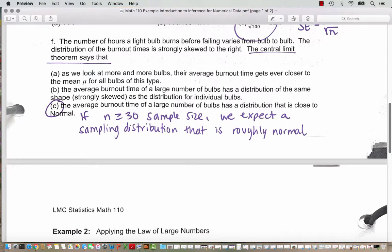Question F. The number of hours a light bulb burns before failing varies from bulb to bulb. The distribution of the burnout times is strongly skewed to the right. The central limit theorem says that. So we want to look at these three answer choices and figure which one matches what the central limit theorem says. So we can rule out option A.